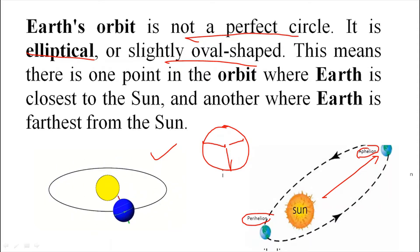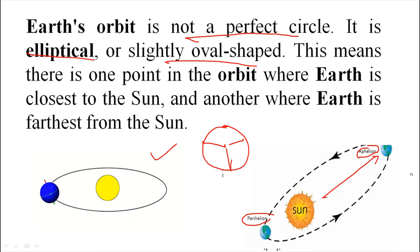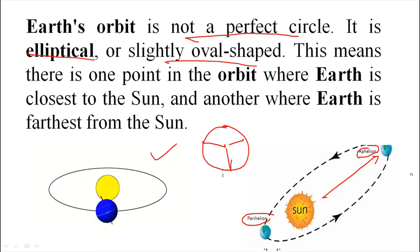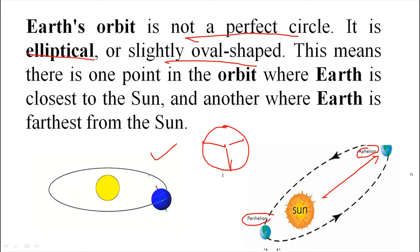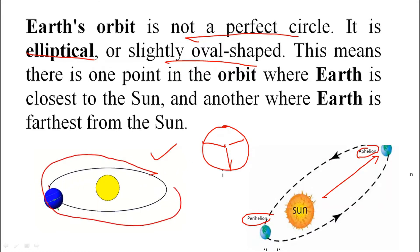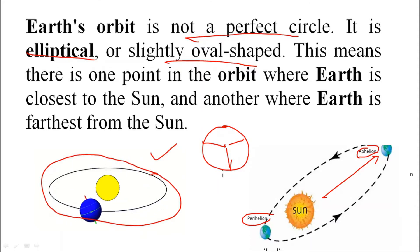Let's revise: The Earth revolving around the sun is called revolution, and it revolves on a particular path called Earth's orbit, which is elliptical in shape. There is a point in the orbit when Earth is closest to the sun — that is perihelion — and when Earth is farthest from the sun, that is aphelion. Earth takes approximately 365 days to complete one revolution, and these 365 days are called one Earth year. Because of this revolution, seasons are formed, which we will discuss later.